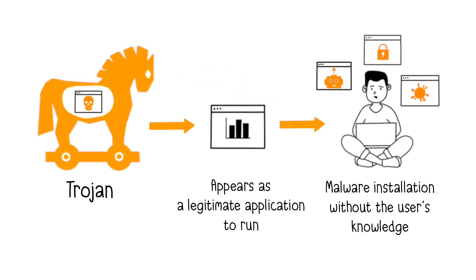Moving on to Trojans, they are malicious programs that masquerade as legitimate software. They secretly embed malicious sub-programs without the user's knowledge. Thus, when the user runs the legitimate program, the hidden malicious sub-program is also executed. A Trojan horse can host a backdoor, allowing cybercriminals to remotely control your device. In such cases, cybercriminals typically aim to steal all your personal and confidential information, such as passwords, banking information, private data, etc.